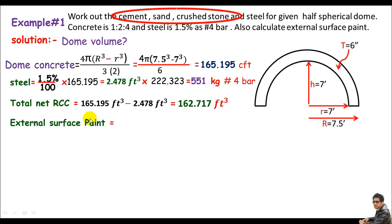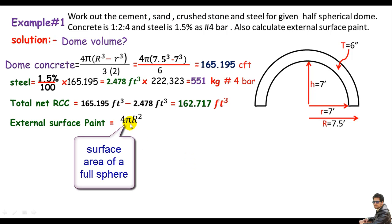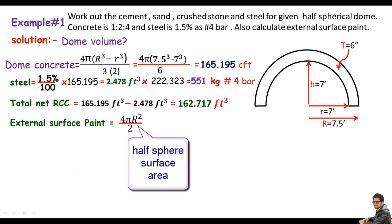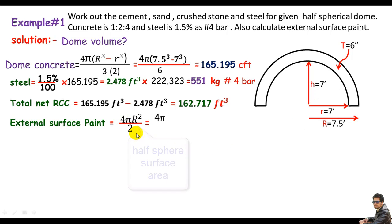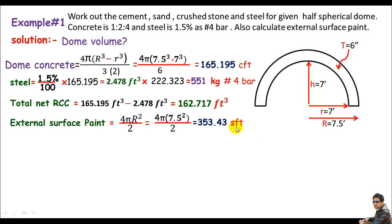The surface area of a full sphere is 4 times pi r squared. For our half sphere, we divide this by 2. With r = 7.5, we get: 4 × pi × 7.5² ÷ 2, which equals 353.43 square feet. This is the external painting area.